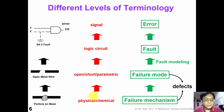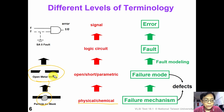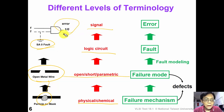There are different terminologies for different levels of abstraction. Failure mechanism is the physical or chemical process that causes the defect — for example, a dust particle falling on the mask. This failure mechanism can be observed as an open in the metal wire, which is called the failure mode. In the logic circuit level, we model this as a stuck-at-one or stuck-at-zero fault. Finally, at the signal level, we can observe the circuit output error. So don't get confused with this terminology.